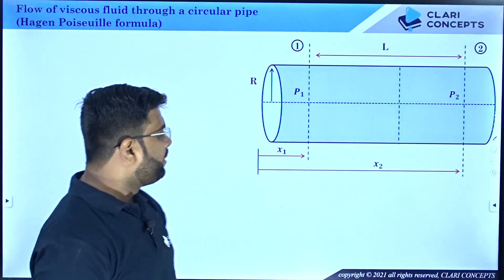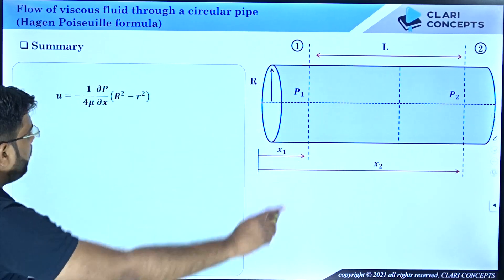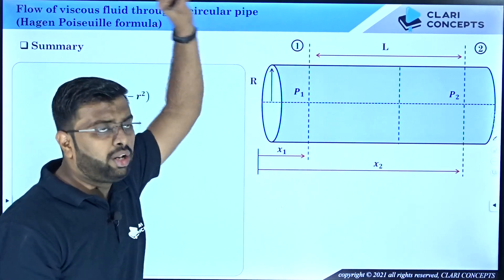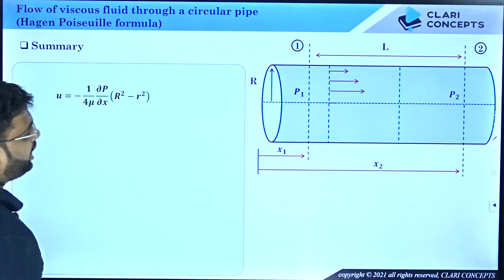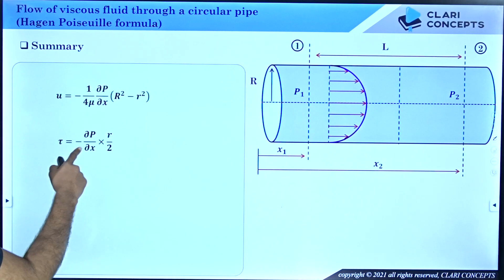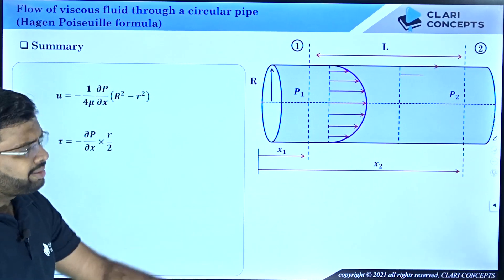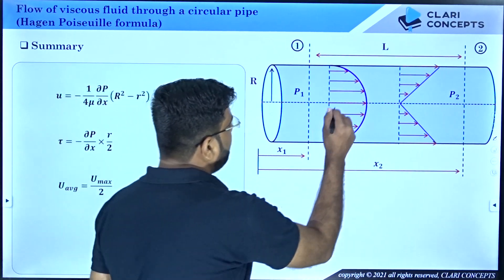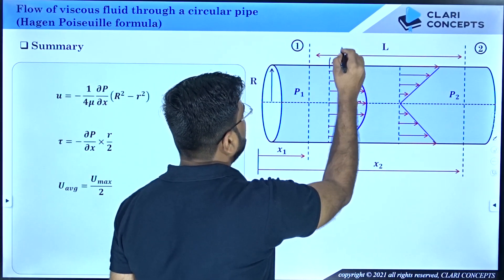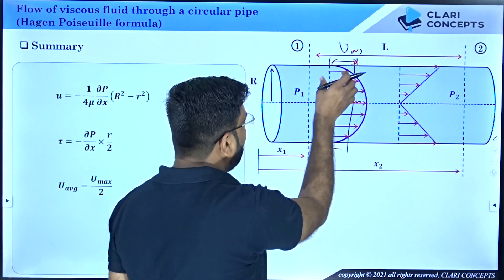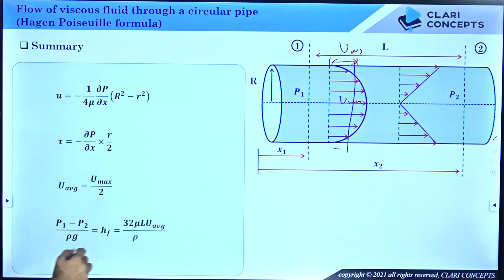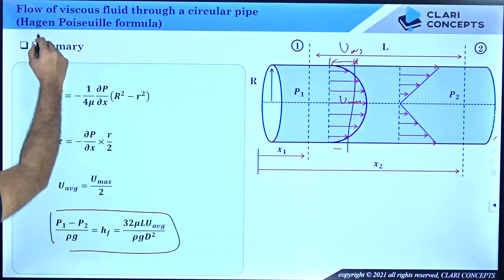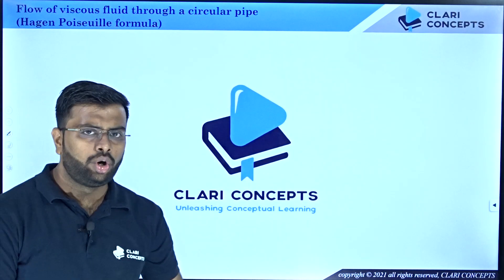In summary: for laminar viscous flow in a circular pipe, the velocity distribution is parabolic — maximum at center, zero at boundary. The shear stress varies linearly — zero at center, maximum at wall. The average velocity U_average equals U_max/2. The head loss is given by the Hagen-Poiseuille formula: H_f = 32μ L U_average / (ρg D²). I hope you have understood. Thank you, and see you in the next class.